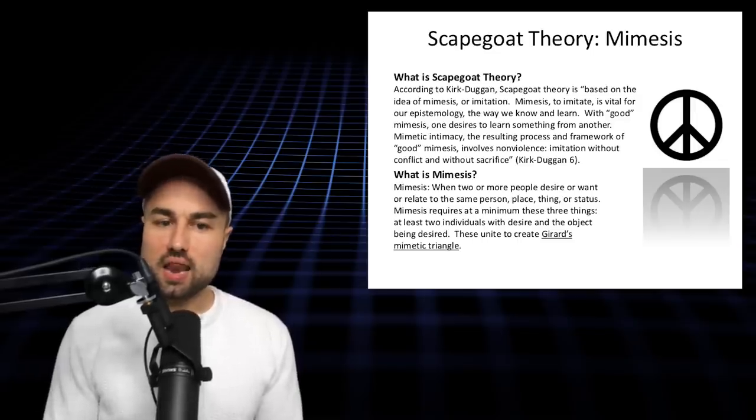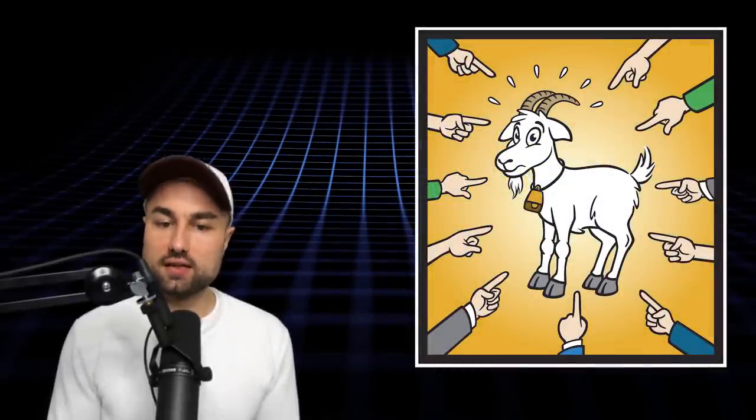Mimetic theory allows us to see that peace thus produced is violent, comes at the expense of a victim, and is built upon lies about the guilt of the victim and the innocence of the community.